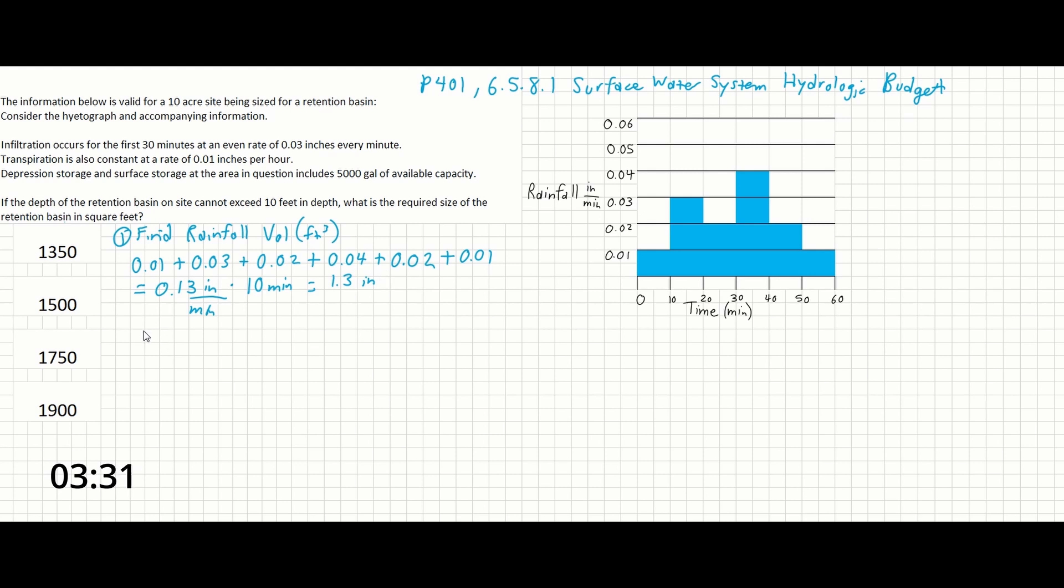From there, we can do more unit conversions. So 1.3 inches times 1 foot over 12 inches times 10 acres, because that's the size of the site this is going to be raining over, times the conversion of 43,560 feet squared per acre. And that's going to give us 47,190 cubic feet.